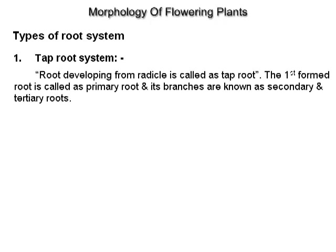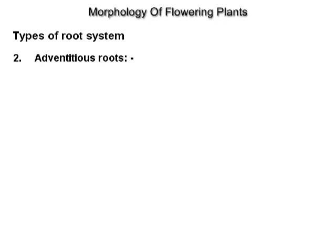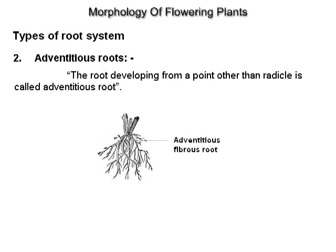Types of root system. Tap root system: a root developing from a radicle is called a tap root. The first formed root is called the primary root and its branches are known as secondary and tertiary roots. Adventitious roots: roots developing from a point other than the radicle are called adventitious roots.